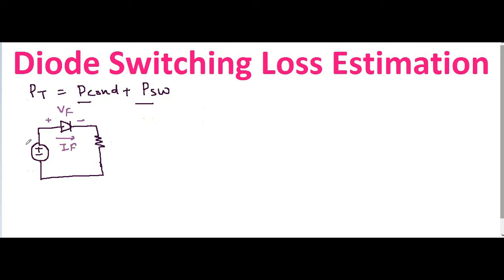Let us understand how the input looks for this diode. There is a high side voltage VH and a low side voltage VL, with zero volts as reference. You are applying high voltage VH and low voltage VL in order to turn on and turn off your diode.